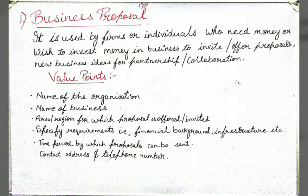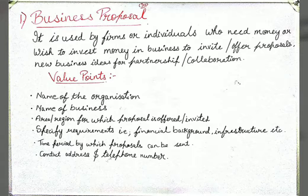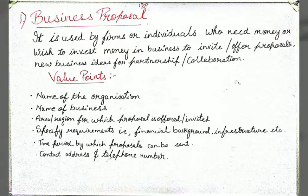The main points for a Business Proposal advertisement are: first, the name of the organization; then the type of business — whether it is a cloth industry or any other type; the area or region for which the proposal is offered, such as northeast or southwest; and the specific requirements, including the financial background of the company or the investor who wants to invest.